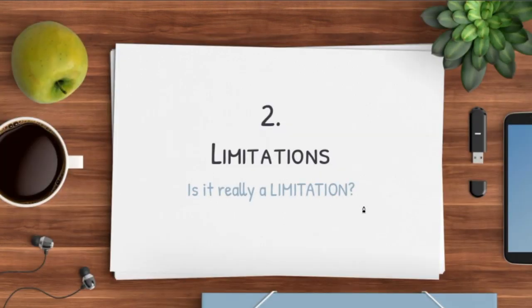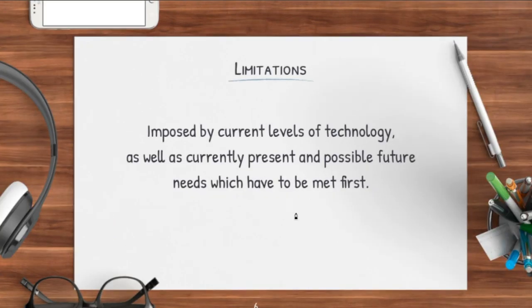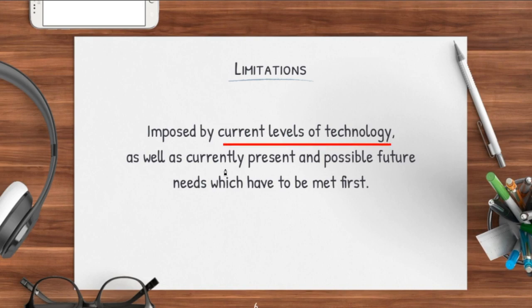Then we move on to limitations. Needs are very simple, right? So what is a limitation? Something that is a limitation to you may not always be a limitation to someone else. Limitations are basically imposed by current levels of technology, as well as current, present, and possible future needs which have to be met first. Limitations occur as a result of needs having to be met.